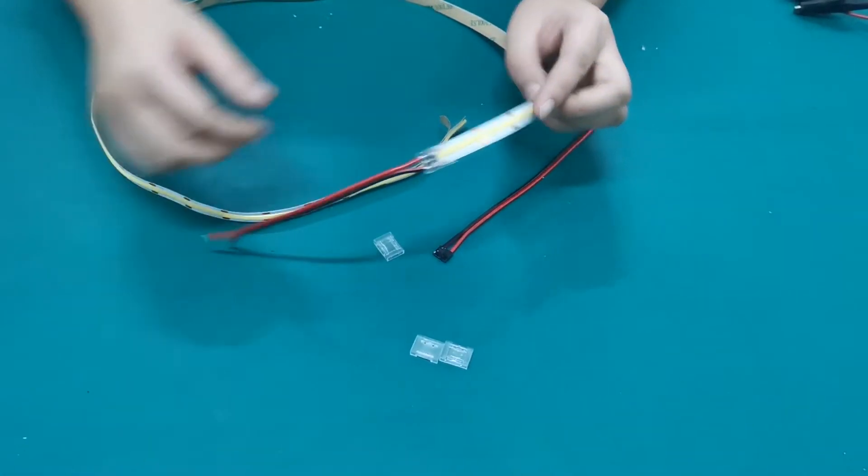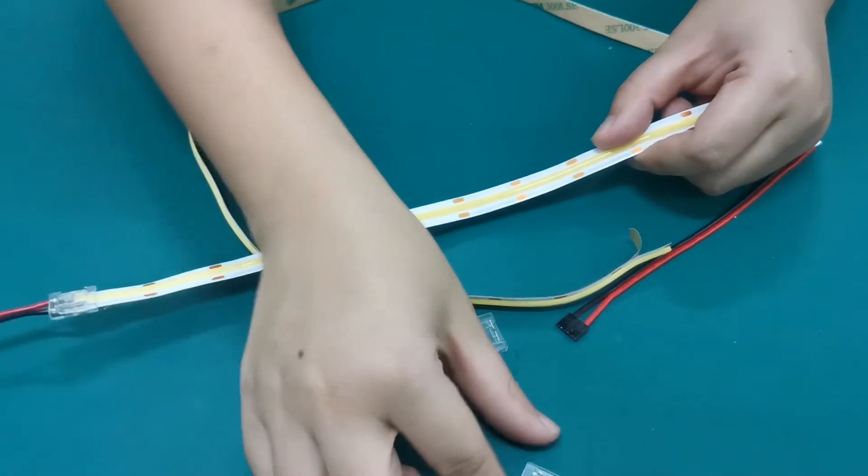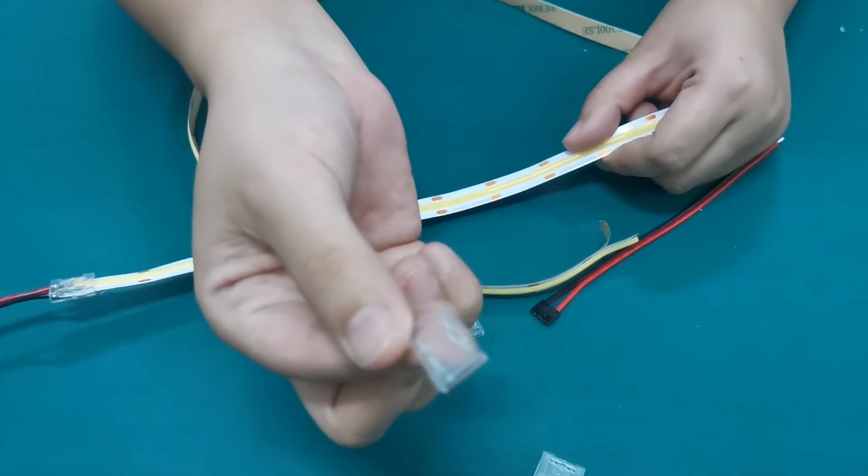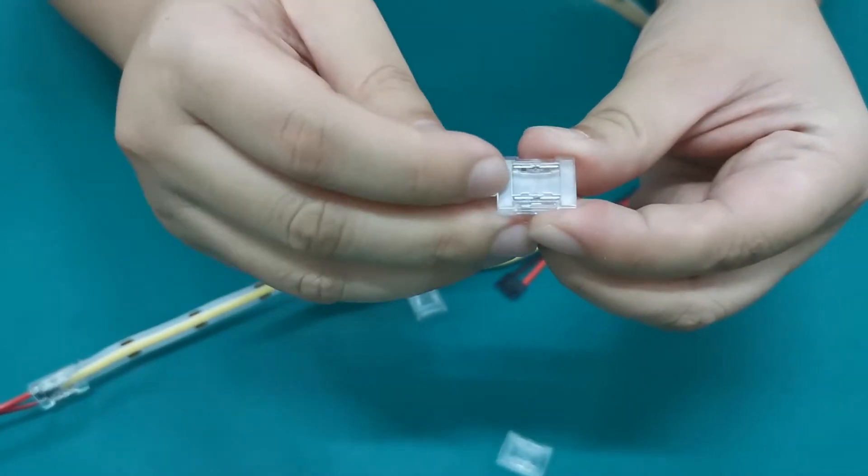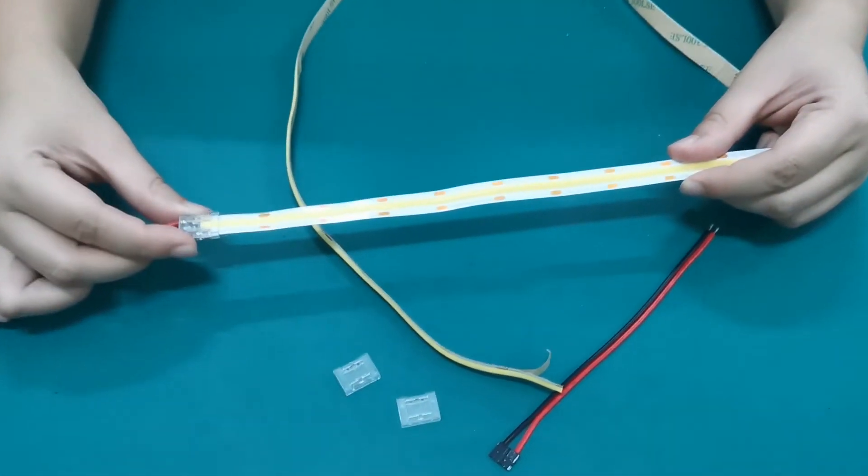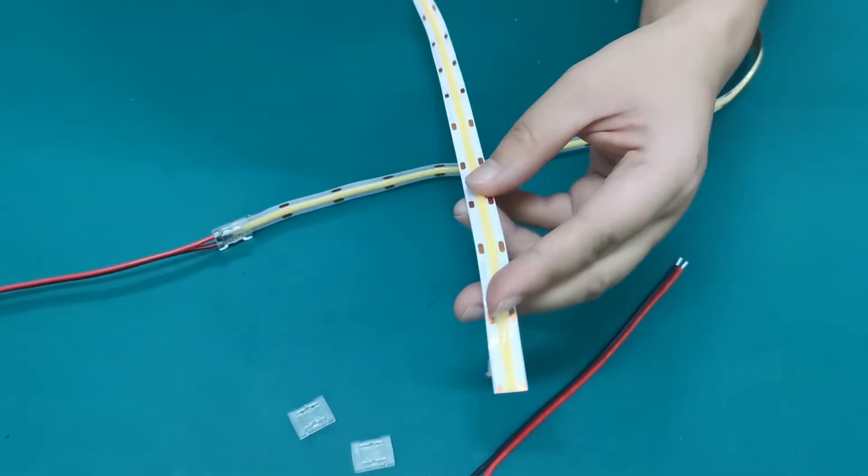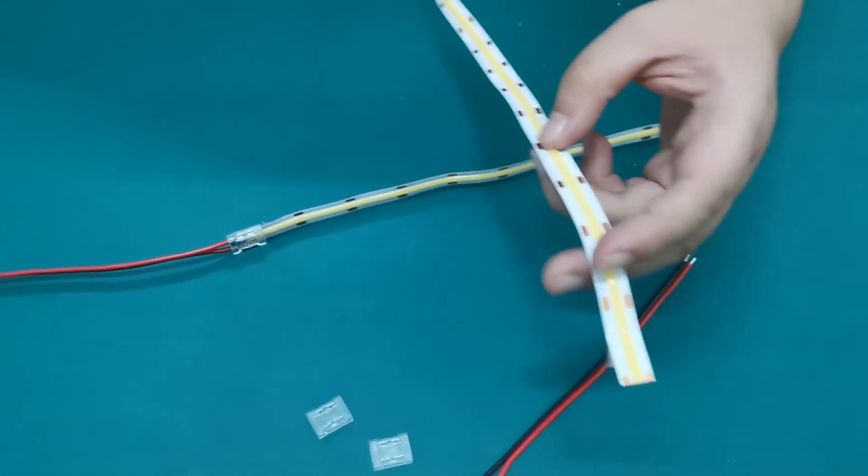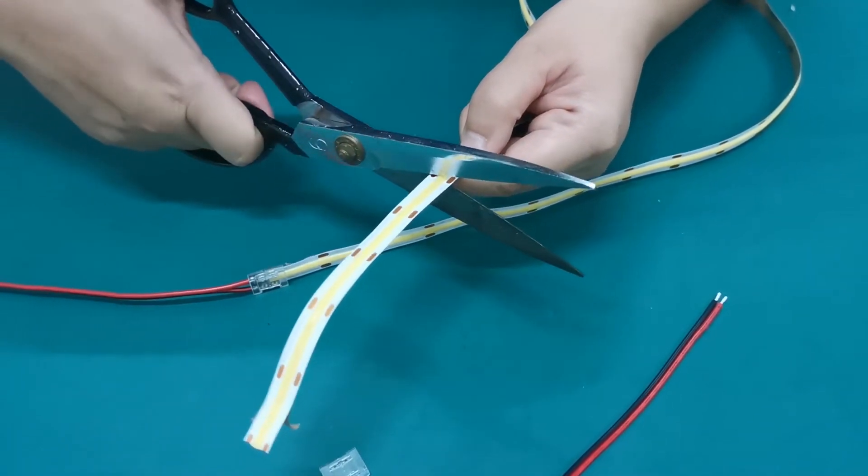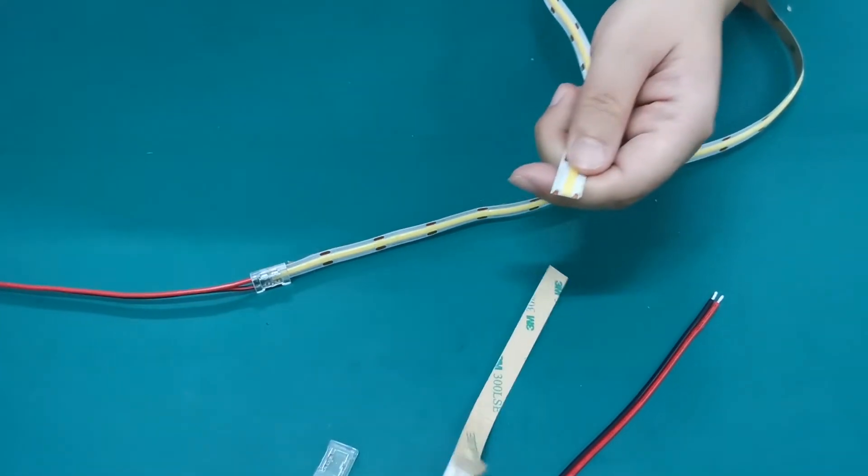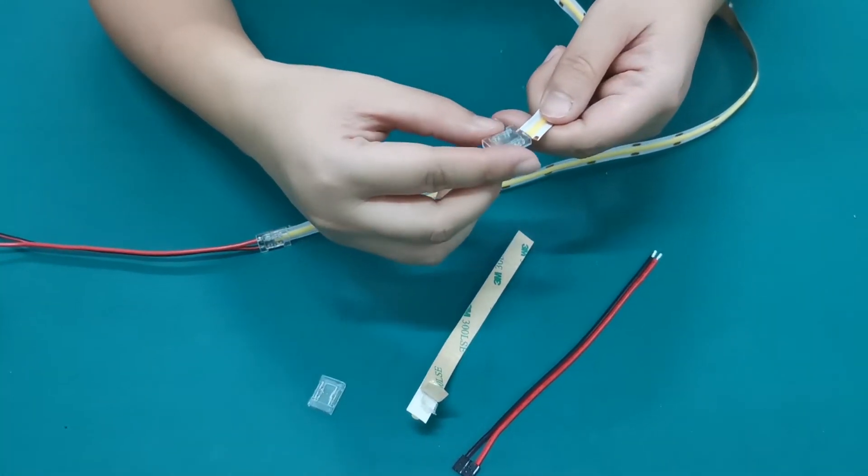And now we would like to introduce the most important connector, this one. You can see very clear. And here, this is the COB LED strip. And we also can cut any part we want. Very easy. And after you cut, you want to connect it.